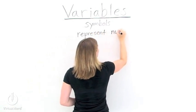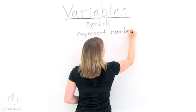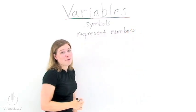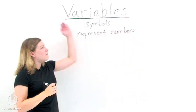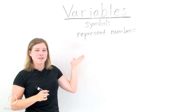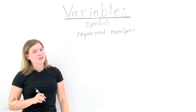These numbers can be anything. They could be 1, they could be 20, they could be pi if you really wanted to. So variables are just symbols that represent numbers, and we usually pick letters to be symbols.